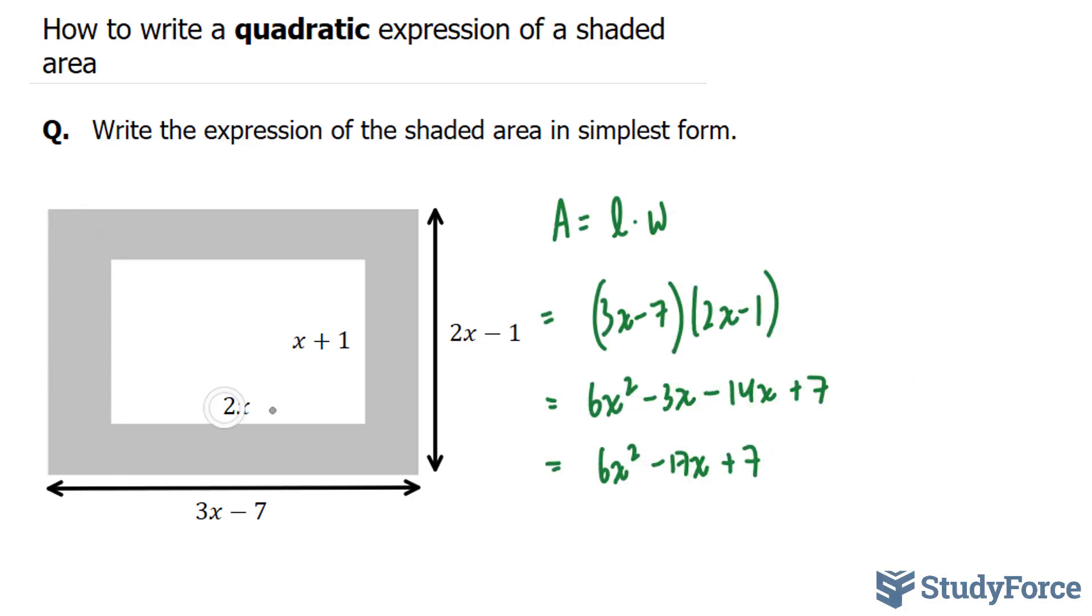Next, I'll find the area of the white rectangle. So area is equal to length times the width. I'm going to assign 2x as my length and my width as x plus 1.